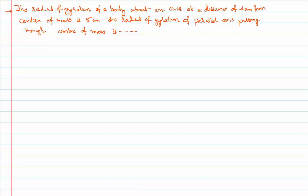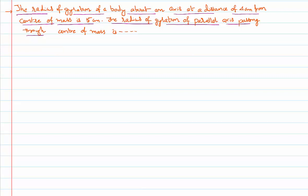Hello everyone, welcome to this video lesson. In this video lesson we are solving a problem. The radius of gyration of a body about an axis at a distance of 4 centimeters from the center of mass is 5 centimeters. The radius of gyration of the parallel axis passing through the center of mass is how much? That's the problem.